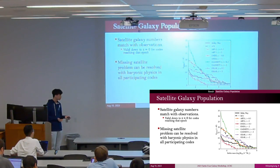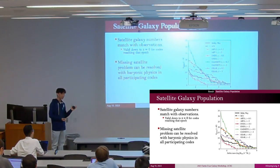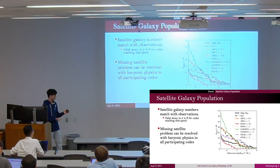These results show that the missing satellite problem can be resolved with baryonic physics, regardless of the specific code or stellar feedback schemes.